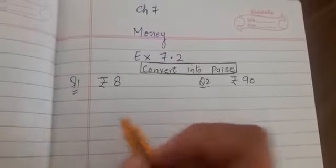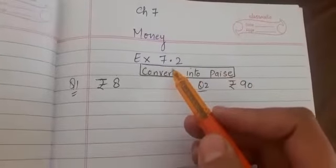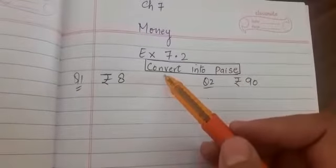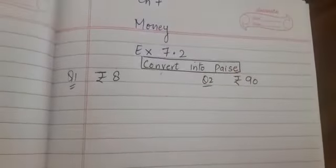Good morning children. Today we are in the second exercise of chapter money, which is exercise 7.2, where we need to convert rupees into paise.